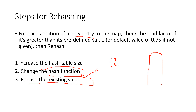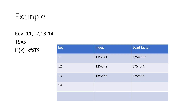Now I am going to give an example for better understanding of the theory explained so far. I have taken elements 11, 12, 13, and 14. My table size is 5 and my hash function is key modulus table size. I will calculate the index as well as the load factor in parallel. If the load factor is greater than 0.5, we will perform rehashing; otherwise we will not perform any rehashing and will do normal hashing.